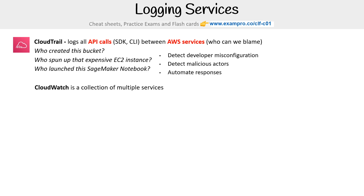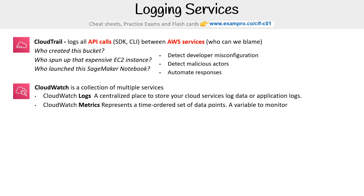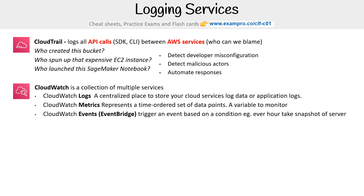Then you have CloudWatch, which is a collection of multiple services. I commonly say this is like an umbrella service because it has so many things underneath it. So we have CloudWatch Logs, which is a centralized place to store your cloud services log data and application logs. Then metrics, which represents a time-ordered set of data points of a variable to monitor. And EventBridge, previously known as CloudWatch Events, triggers an event based on a condition.